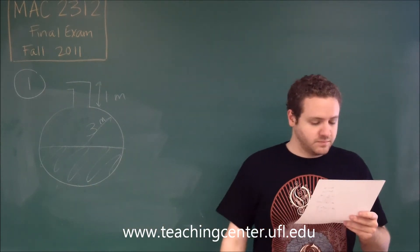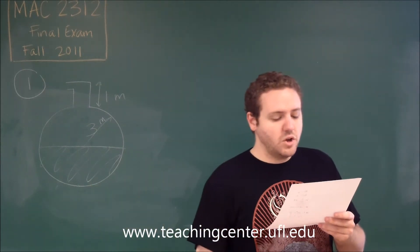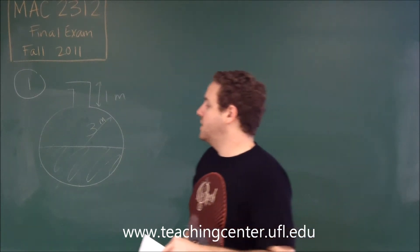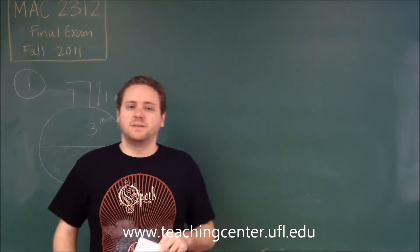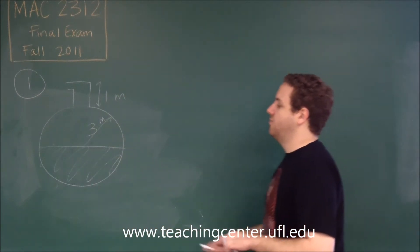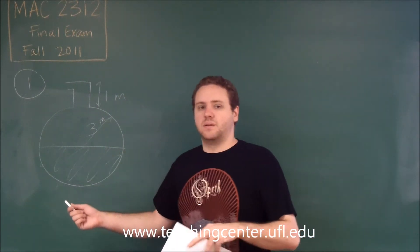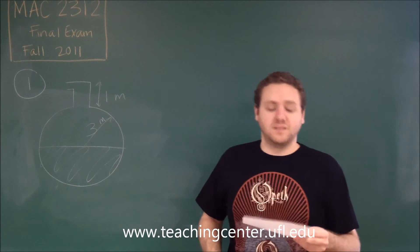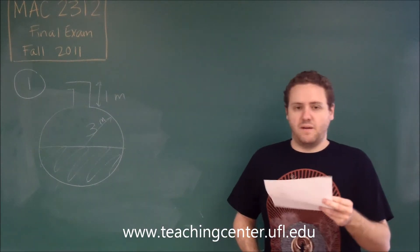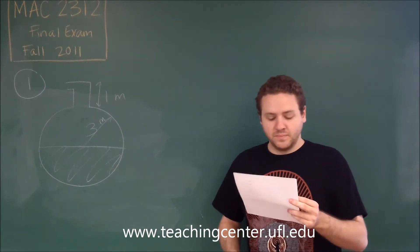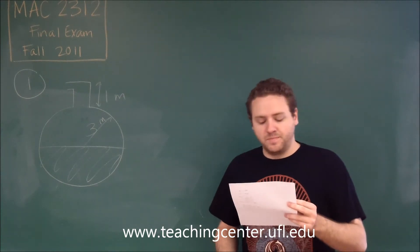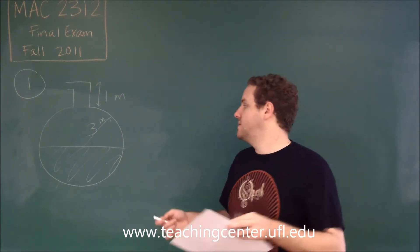To eliminate some answers, if we know X is going from 0 to 3, then our integral has to go from 0 to 3. That eliminates three of the answers right away, so we're only down to D and E at this point.